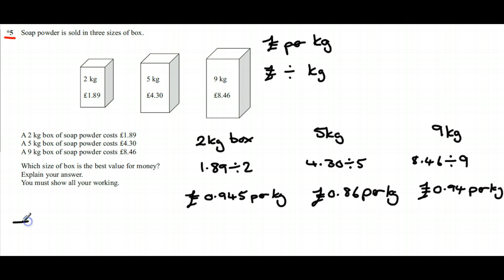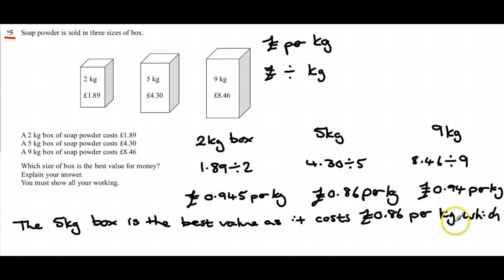So, the 5 kilogram box is the best value as it costs 86p per kilogram, which is less than the cost per kilogram for the 2 kilogram and 9 kilogram boxes.